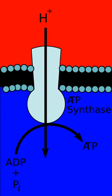At the Qi site, in total four protons are translocated: two protons reduce quinone to quinol and two protons are released from two ubiquinol molecules.